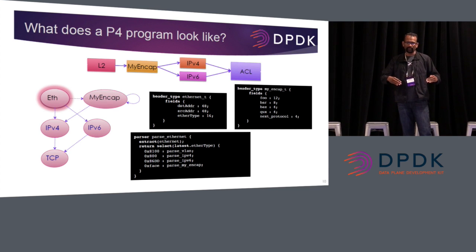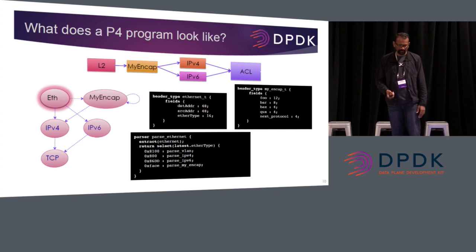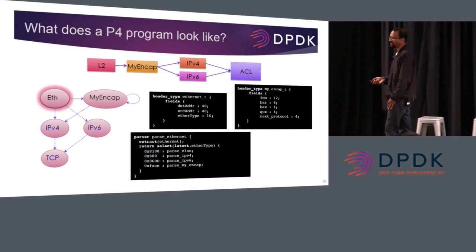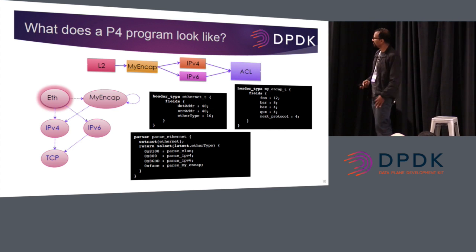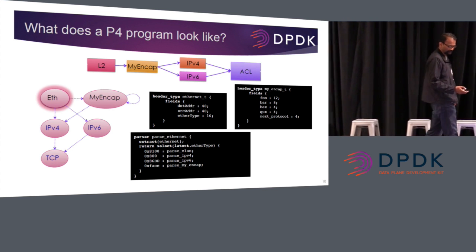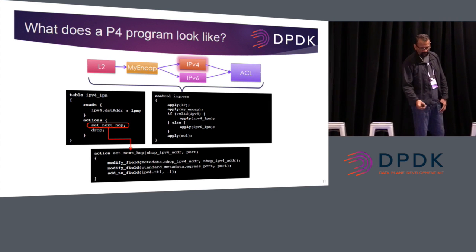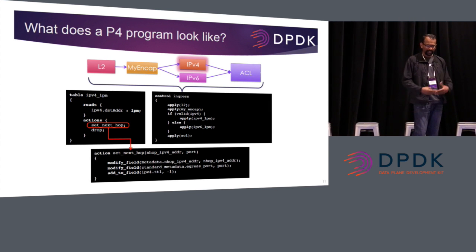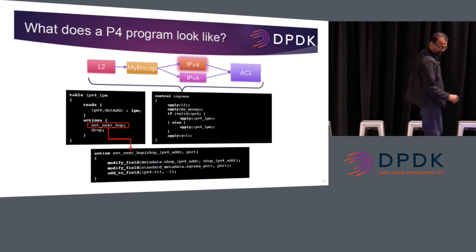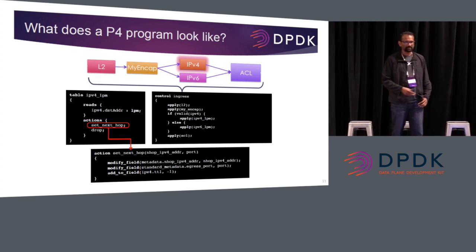Here's a little deep dive into what a P4 program looks like. It's quite readable — it looks like C code. You see descriptions of two header types: one talking about the Ethernet header, and another talking about your own encapsulation protocol. And then at the bottom you see how you can build a parser out of this. In the P4 program you create different tables for lookup and then you do actions.